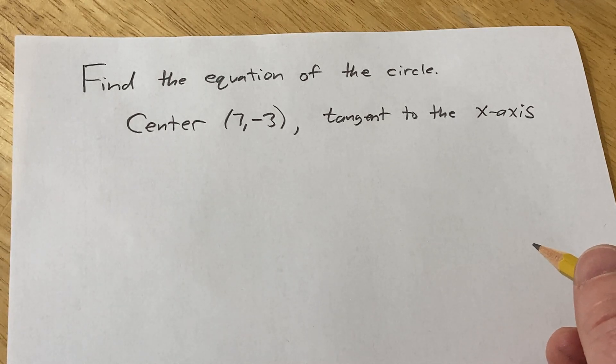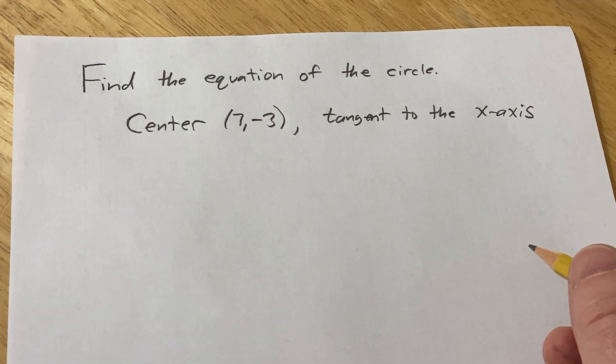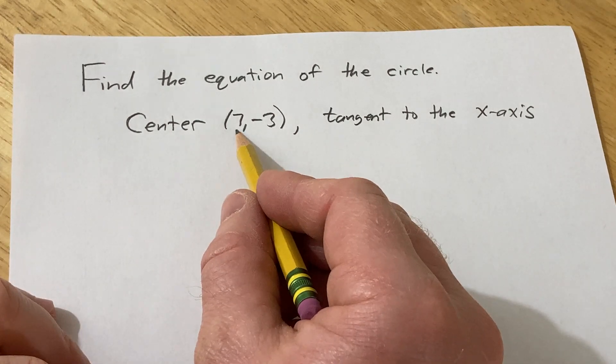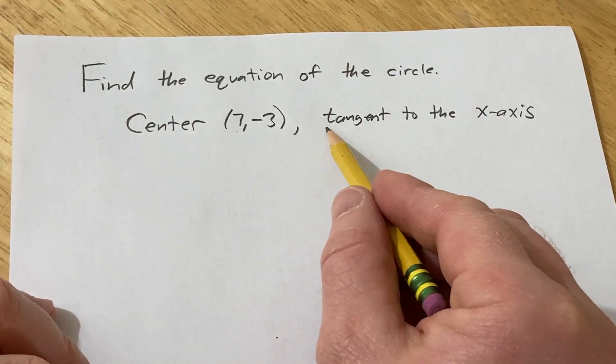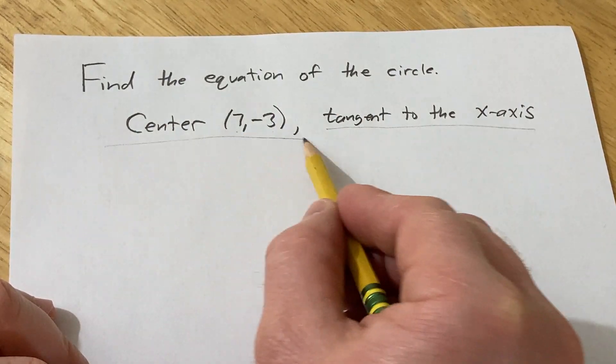Hi, in this problem you're going to find the equation of the circle. We're told that the center is 7, -3 and we're also told it's tangent to the x-axis.